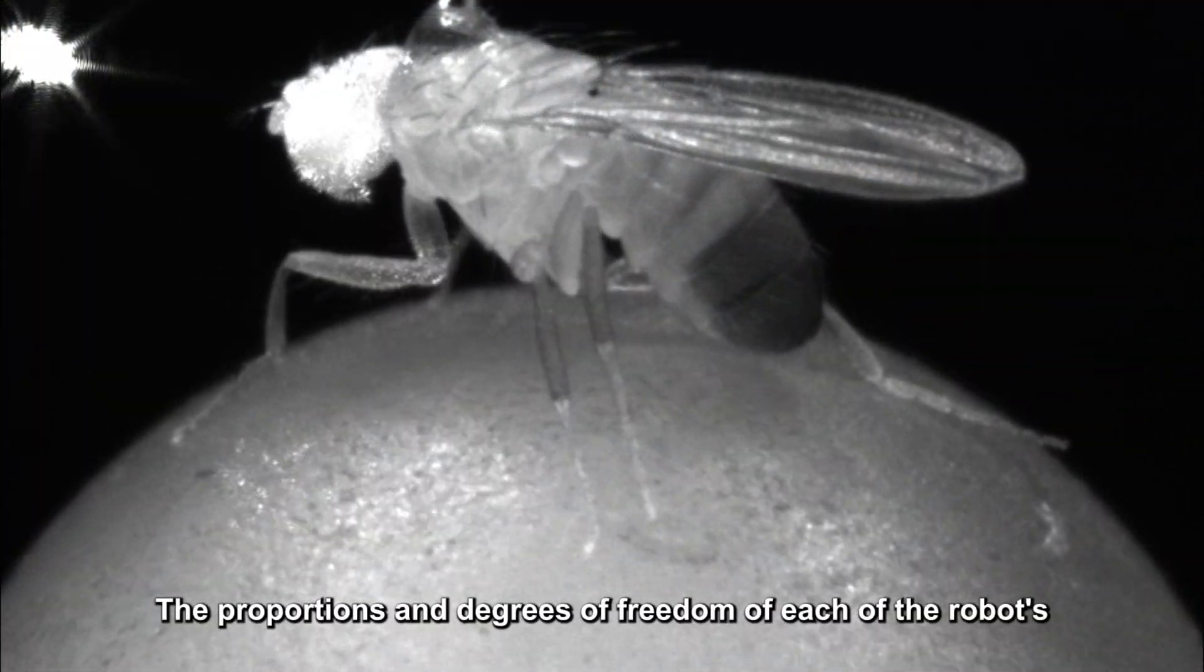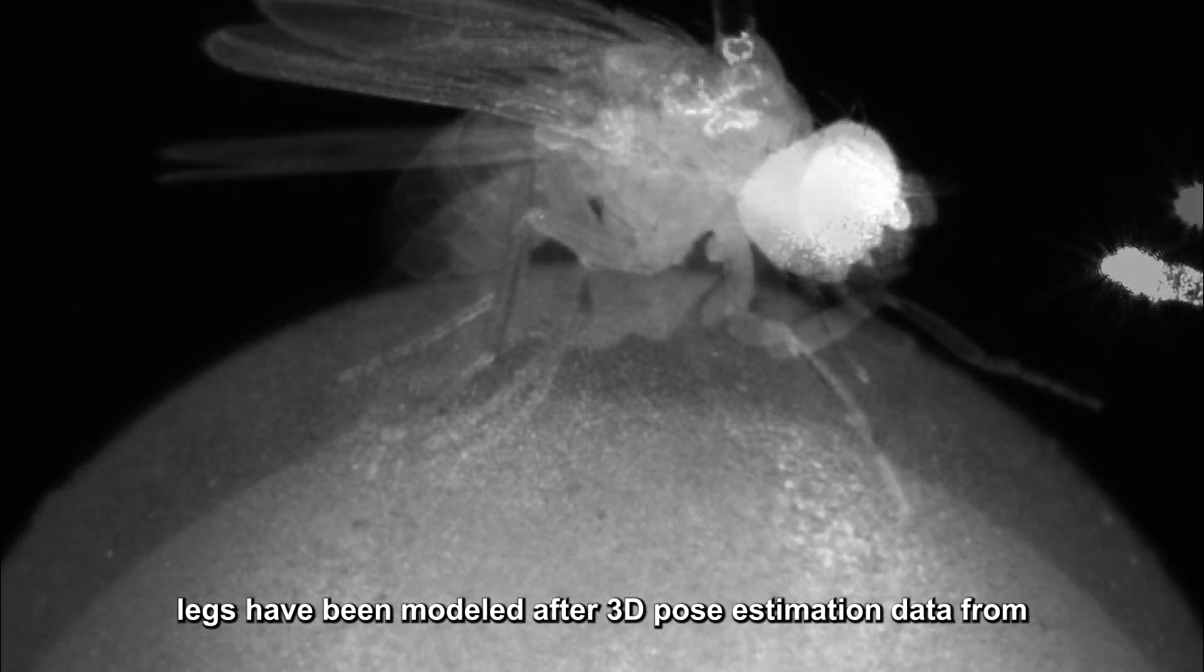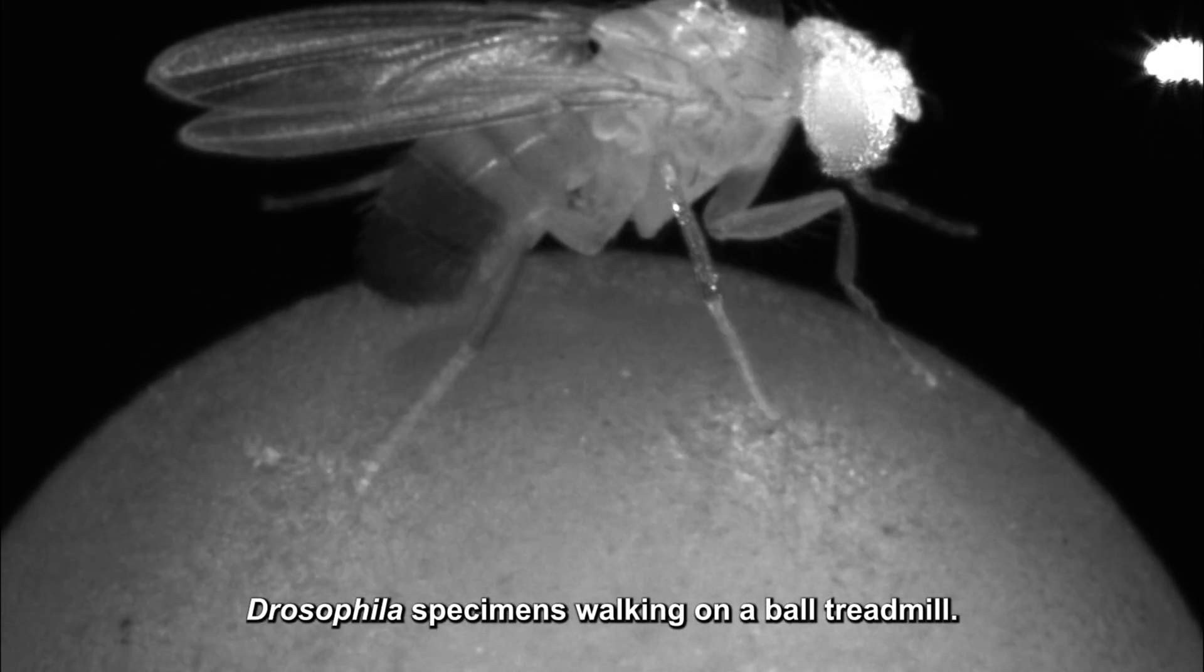The proportions and degrees of freedom of each of the robot's legs have been modeled after 3D pose estimation data from Drosophila specimens walking on a ball treadmill.